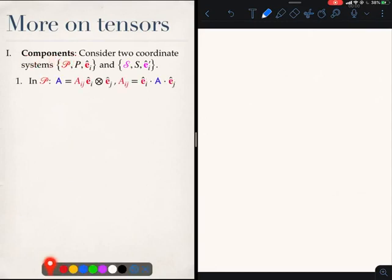What we have just learned is that if we had a coordinate system script P with origin at capital P and unit vectors given by ei, then this tensor A can be expressed in terms of a linear combination over the tensorial basis ei tensor ej.